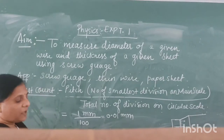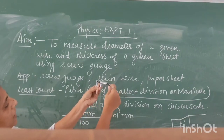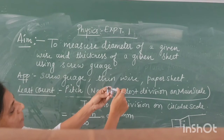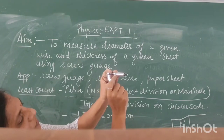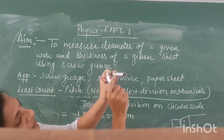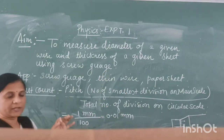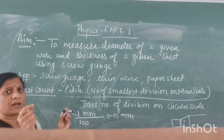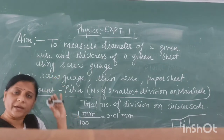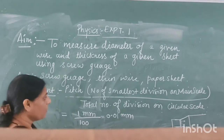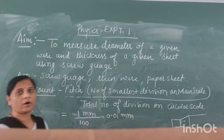One more thing: if you close the screw gauge using the circular scale, the 0 of the circular scale coincides with the 0 of the main scale. If this condition happens in any device like a screw gauge — if both zeros are coinciding — it means this instrument does not have any zero error.